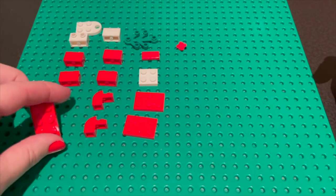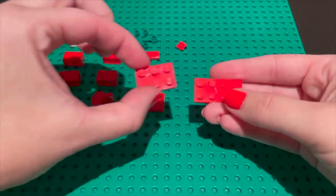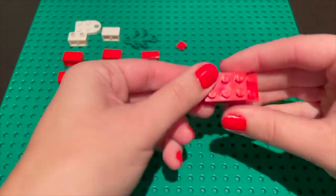We're going to start with a two by four red plate. Then you're going to take two two by three plates to put on top of one end, one on top of the other.